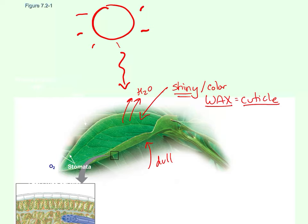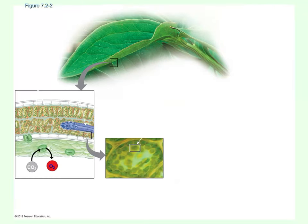The bottom of the leaf doesn't have that wax because the leaf needs to exchange gases. The bottom of the leaf needs to be open and porous to exchange gases with the environment. In a way, plants breathe like we do — they exchange oxygen and carbon dioxide with the environment, and they do this from the bottom of the leaf through tiny pores. If you look at this picture, carbon dioxide is going into the leaf and oxygen is leaving. That pore is called a stoma — stomata are the pores of the leaf.